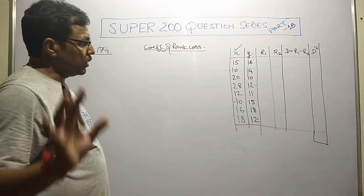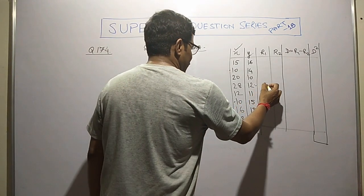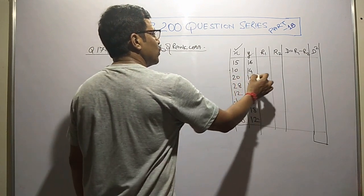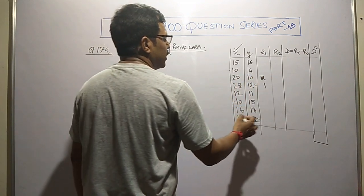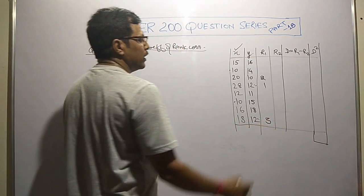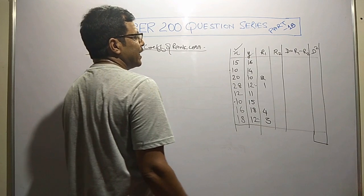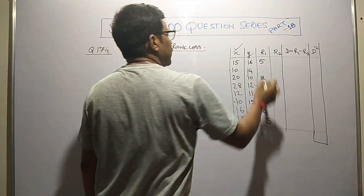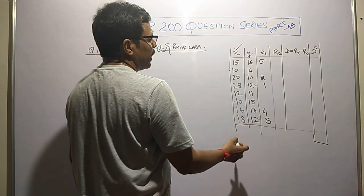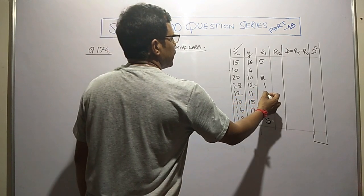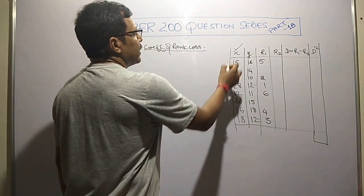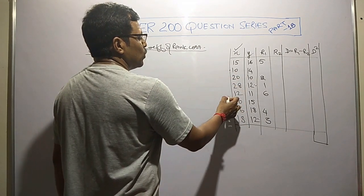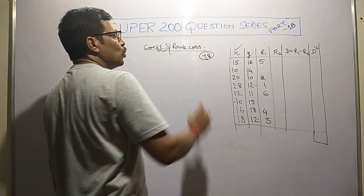For x variate, highest to lowest rank: first rank for highest value 22, second rank for 20, third for 18, fourth for 16, fifth for 15, sixth for 12. Then this set of 10 repeated twice.